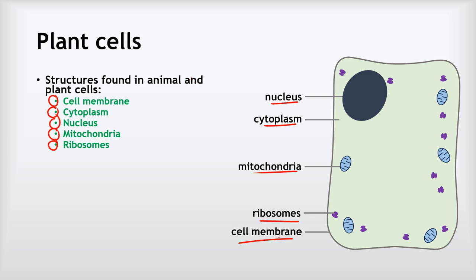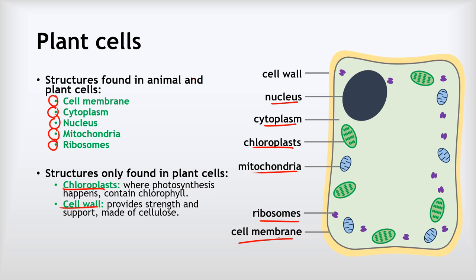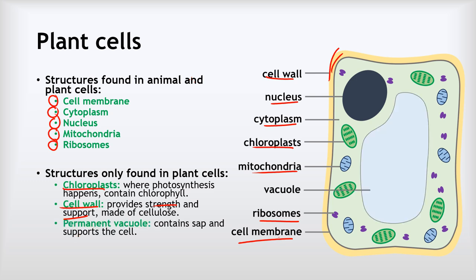Plant cells also have chloroplasts, where photosynthesis takes place, and they contain chlorophyll. We've also got cell walls, which provide strength and support and are made of cellulose — notice the cell wall is around the outside of the cell membrane. It also helps prevent the cell from bursting as it fills with water. Finally, we've got the permanent vacuole, a large area in the centre of the cell which stores sap and supports the cell, pushing out against the cell wall like air in a tyre.